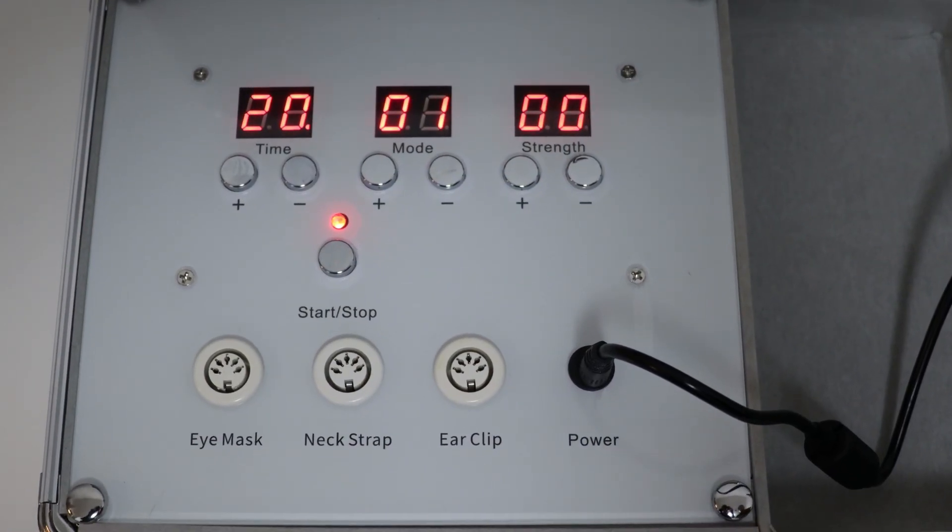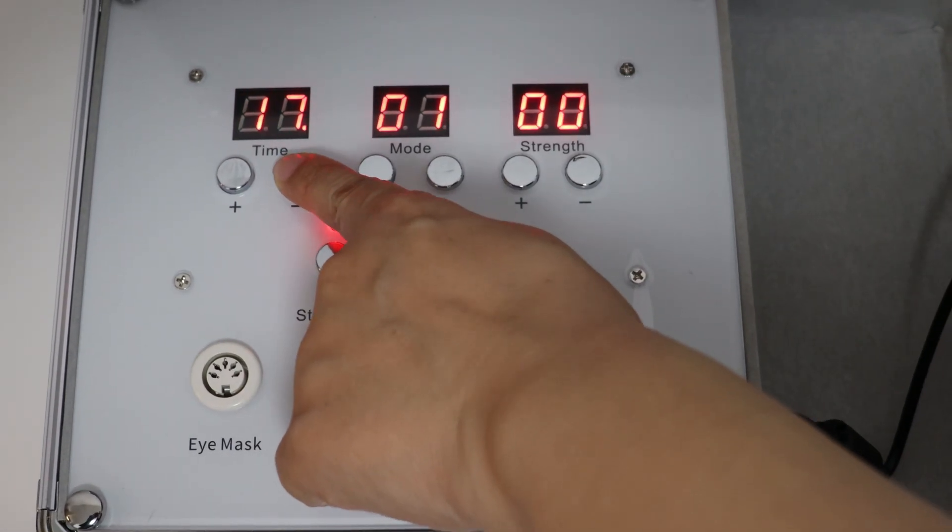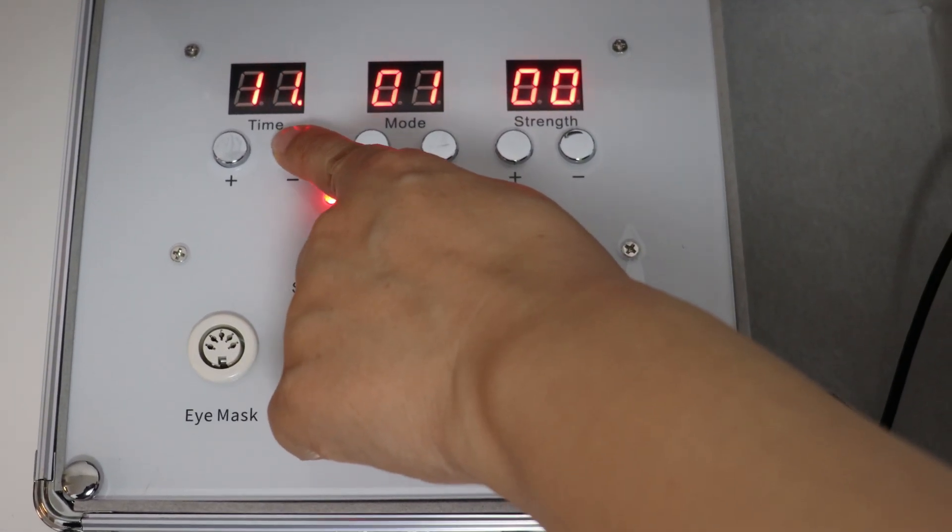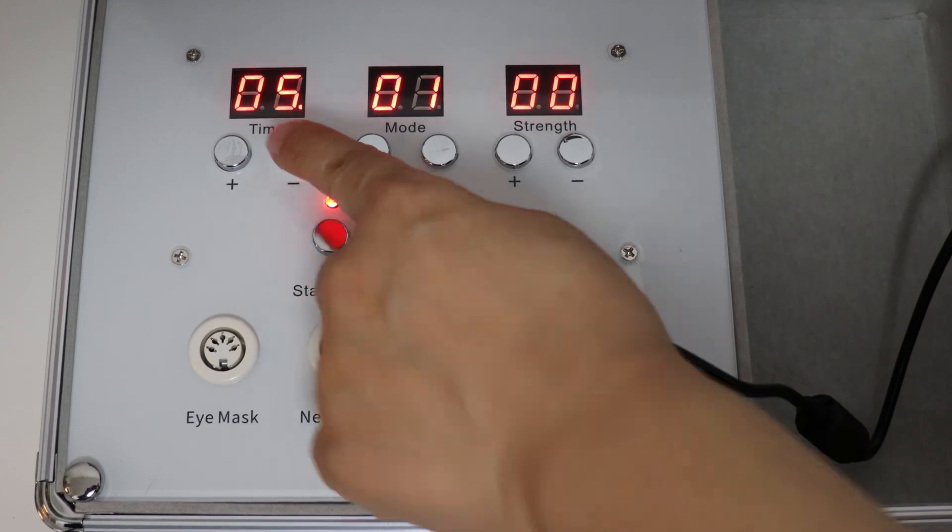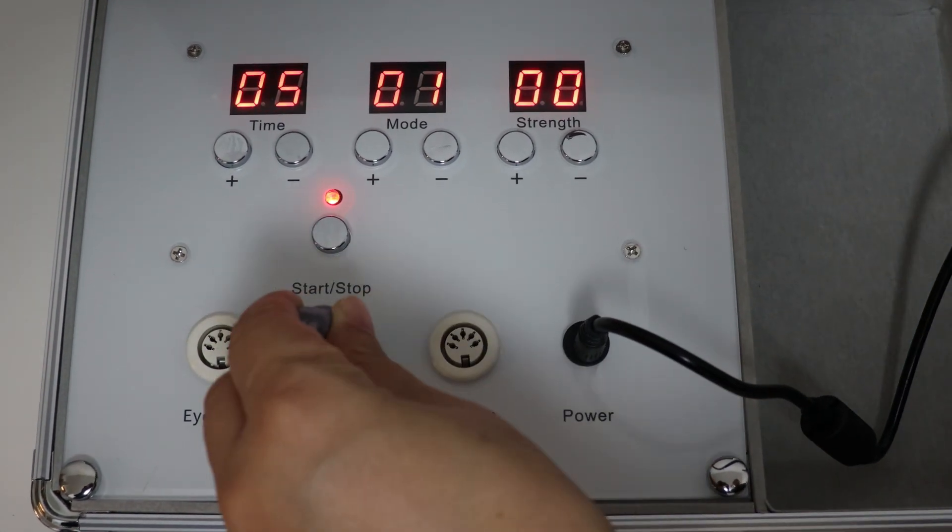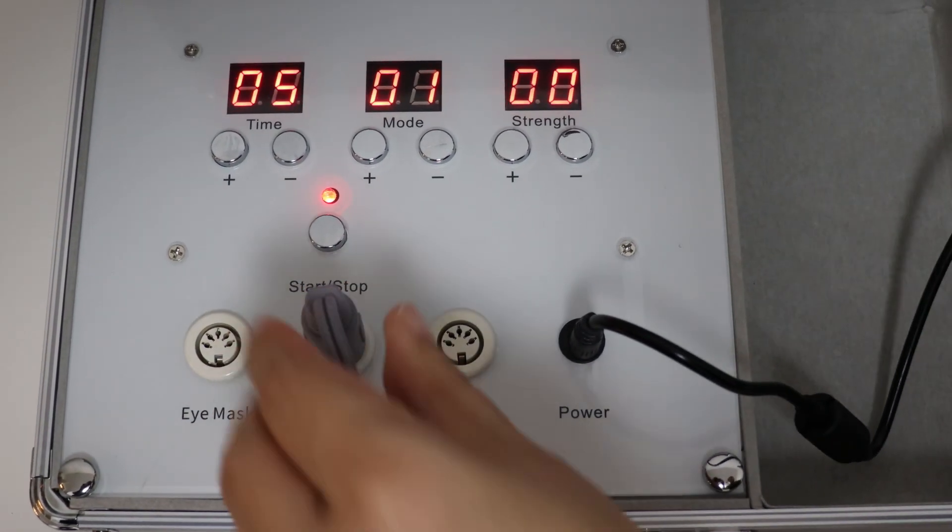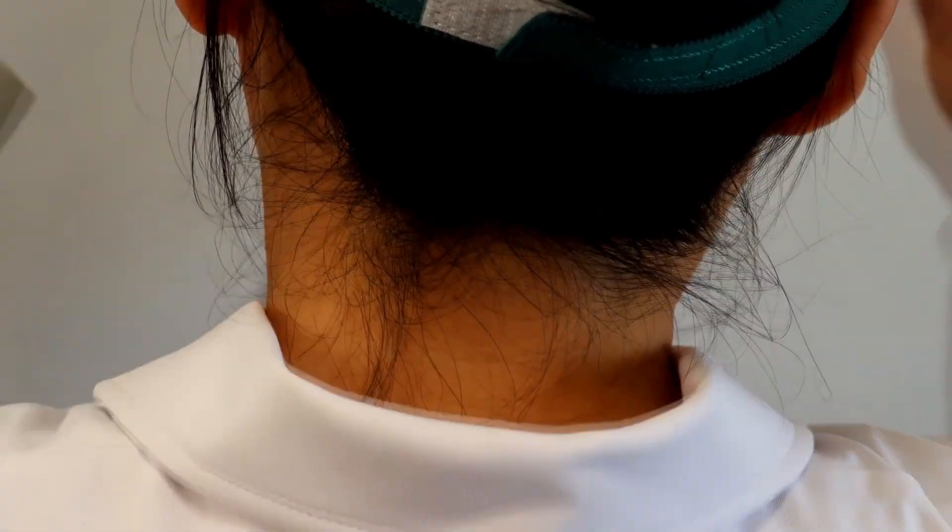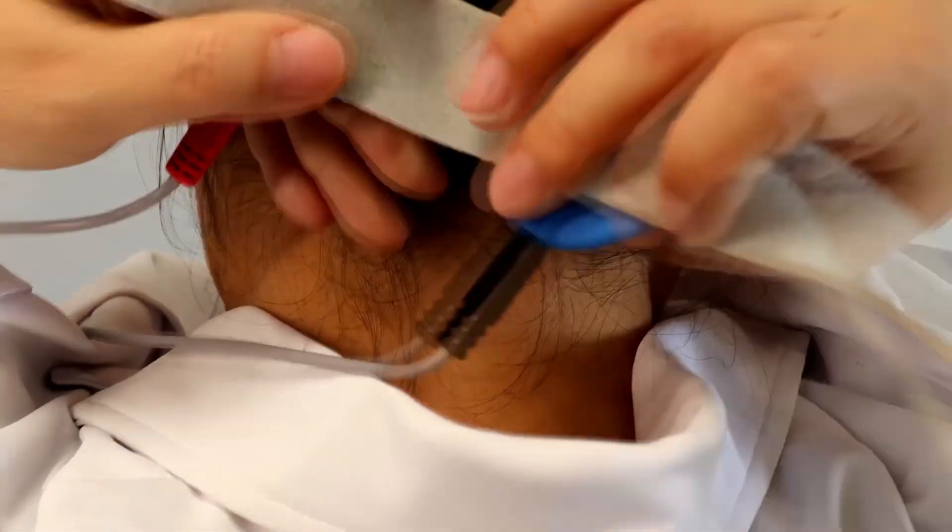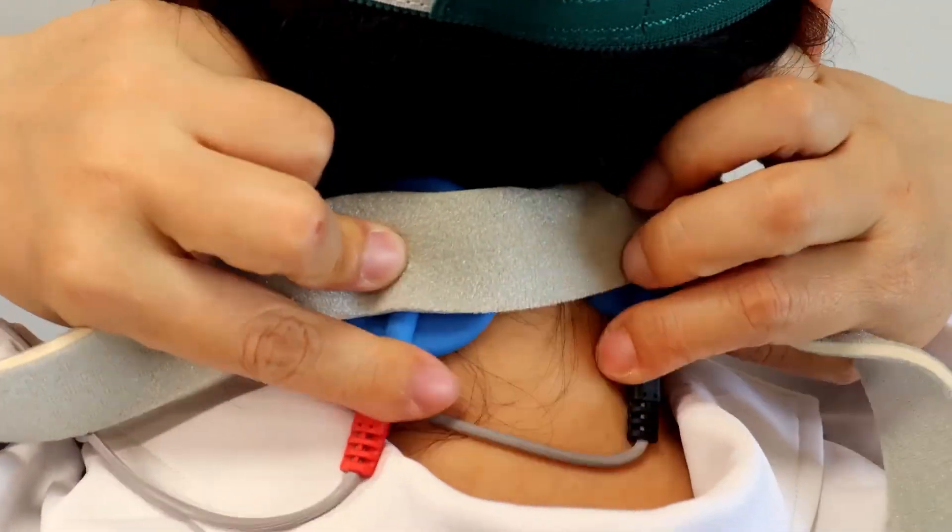Part 2, stimulate the acupoints on the back of your neck for 5 minutes. The black side of the electrode pads should be pressed firmly against the back of your neck and secured with the Velcro at the front.